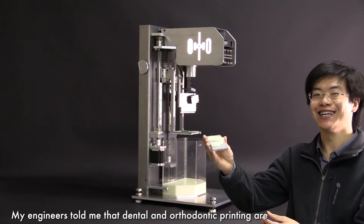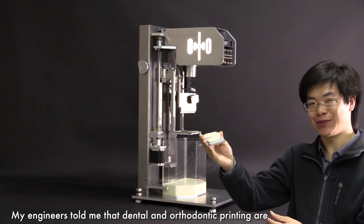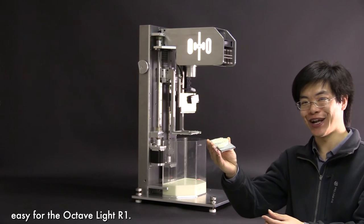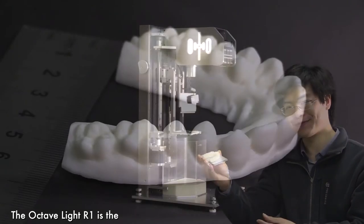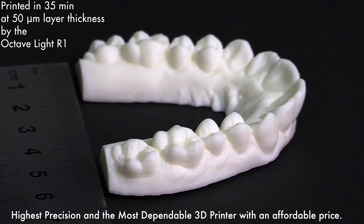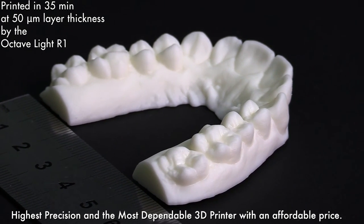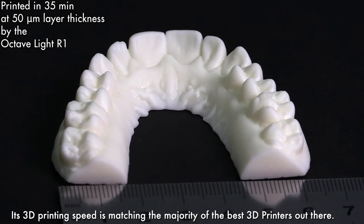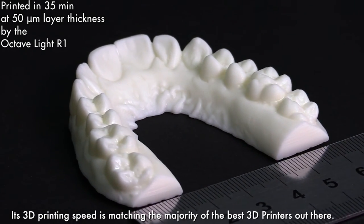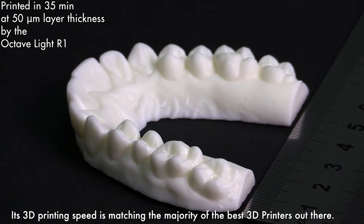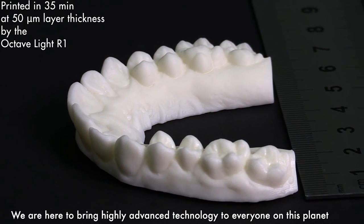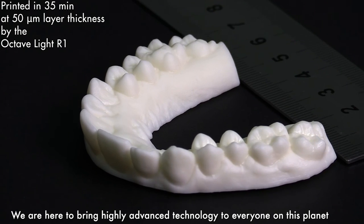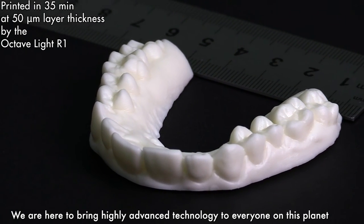My engineers told me that dental and orthodontic printing are easy for the Octav Light R1. The Octav Light R1 is the highest precision and the most dependable 3D printer with an affordable price. Its 3D printing speed is matching the majority of the best 3D printers out there. We are here to bring highly advanced technology to everyone on this planet at the lowest price we can manage.